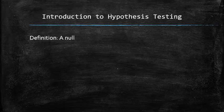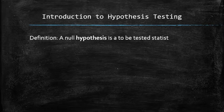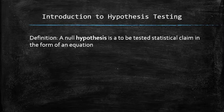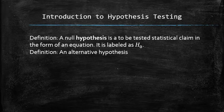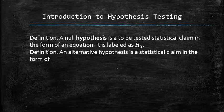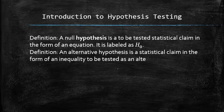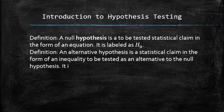A null hypothesis is a to-be-tested statistical claim in the form of an equation. It is usually labeled as H0. An alternative hypothesis is a statistical claim in the form of an inequality to be tested as an alternative to the null hypothesis. It is usually labeled as HA or H1.